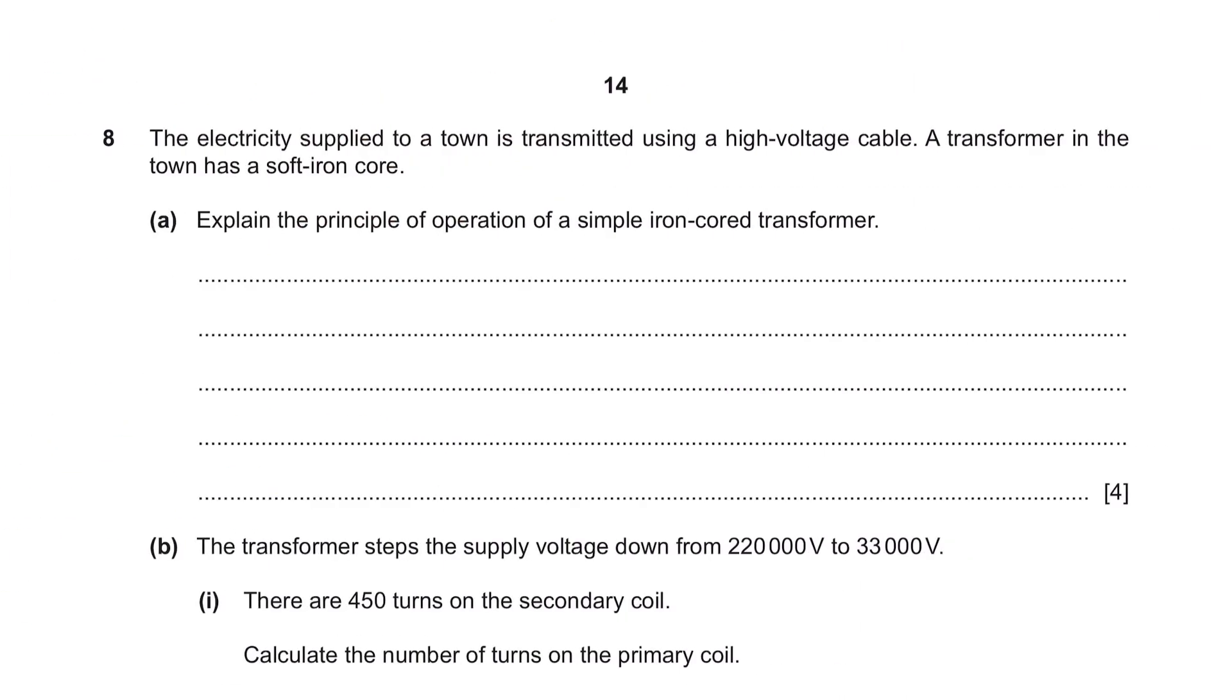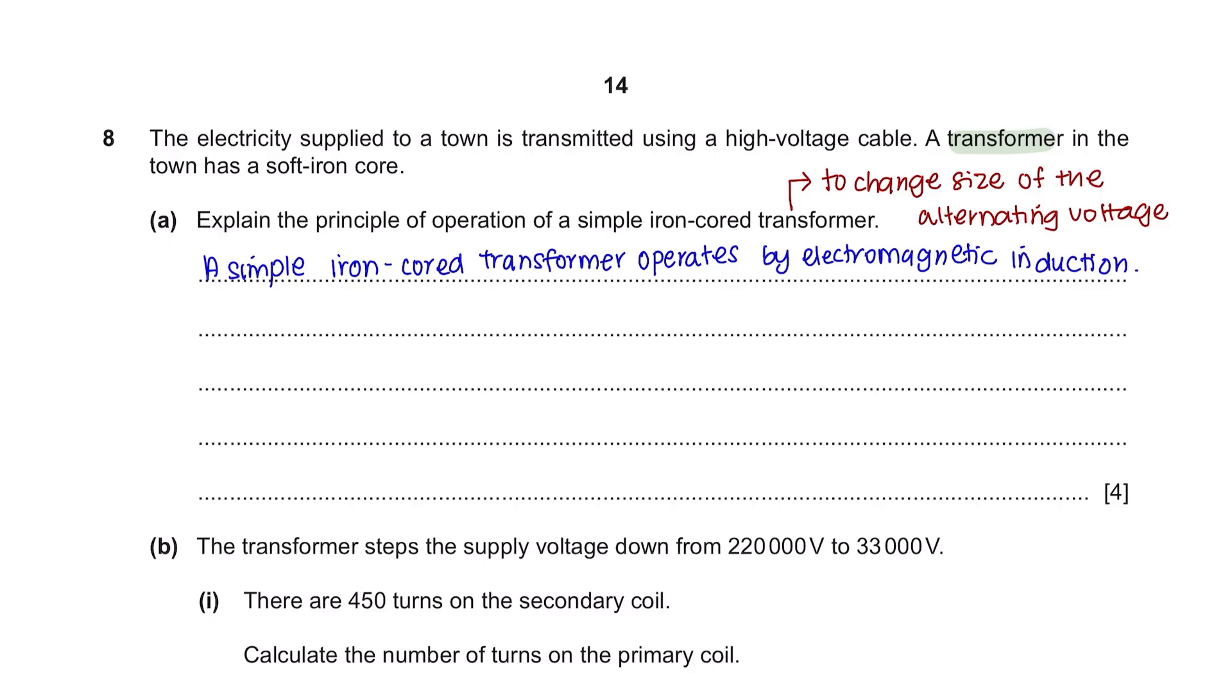Question 8. The electricity supplied to a town is transmitted using a high voltage cable. A transformer in the town has a soft iron core. The purpose of a transformer is to change the size of the alternating voltage. Question A: Explain the principle of operation of a simple iron core transformer. You must know how a transformer works otherwise you could lose the 4 marks given over here. A simple iron core transformer operates by electromagnetic induction. The alternating current in the primary coil creates a changing magnetic field. This then induces a changing magnetic flux in the core which links with the secondary coil causing an induced voltage.